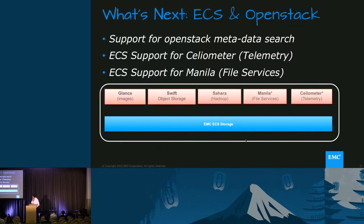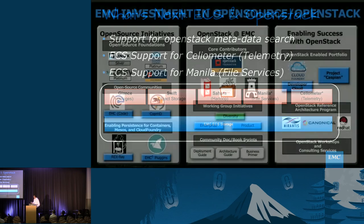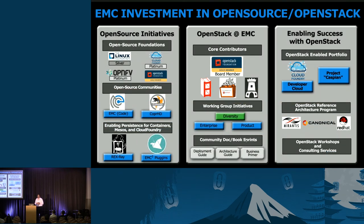Looking at what's coming next: we're working on supporting metadata search at the API level for OpenStack. We're going to look at the metering service and support ECS pushing metering data to integrate with Ceilometer, integrating monitoring data as well. And given that we have file services, ECS is definitely going to look at Manila, so you can integrate with Manila and get the benefit of that. This is the view of the next version of ECS with OpenStack, and we're very excited about it. Thank you everyone for coming — let's take some questions.